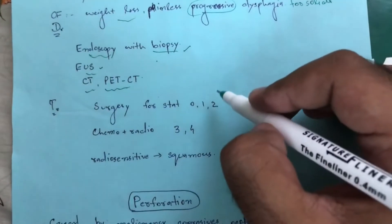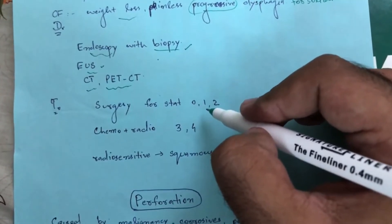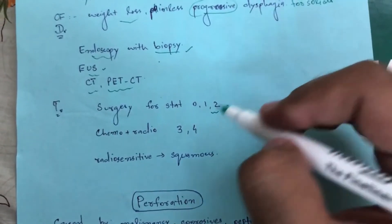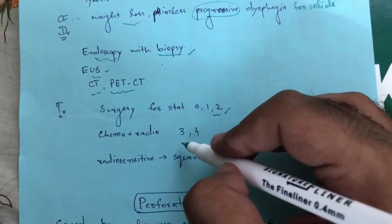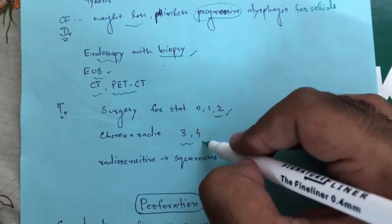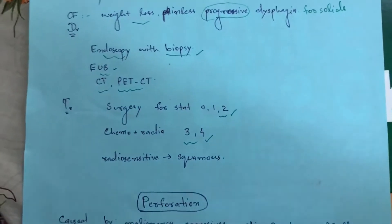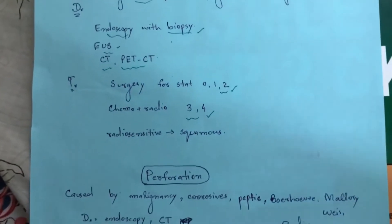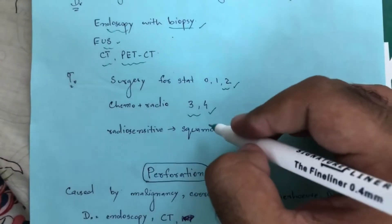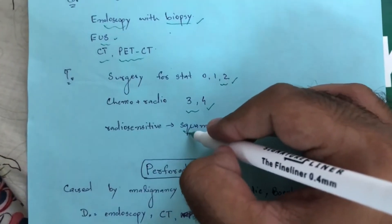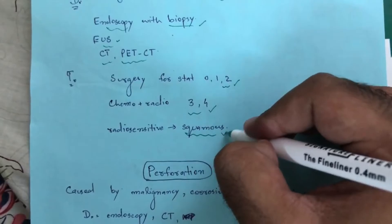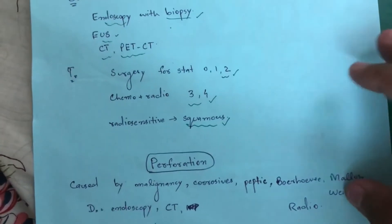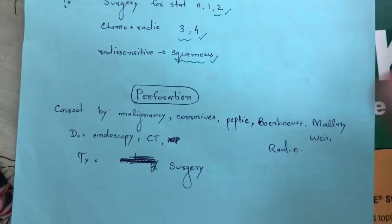Treatment of esophageal cancer: stage 1 and 2 are managed surgically. Stage 3 and 4 are managed with chemotherapy or radiotherapy. Squamous cell carcinoma is radiosensitive, so it is better treated with radiotherapy.